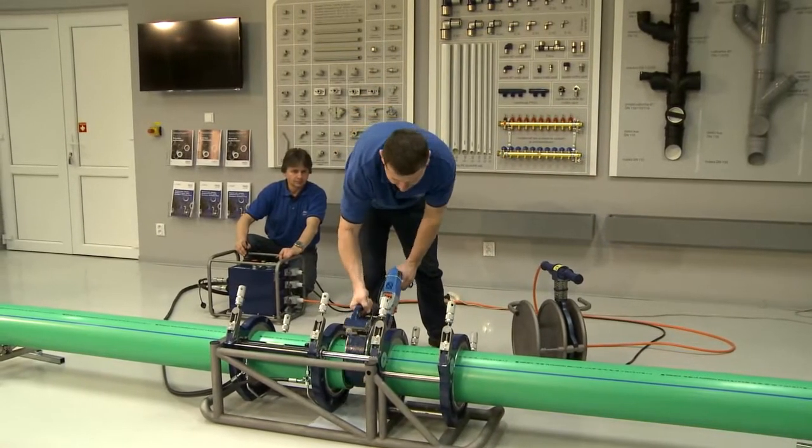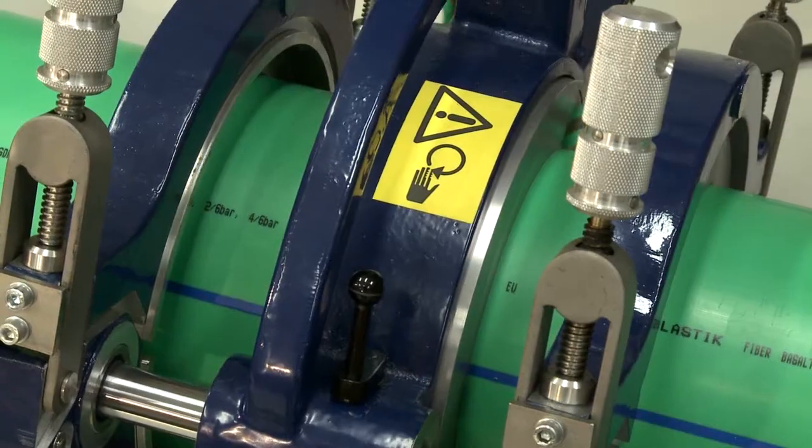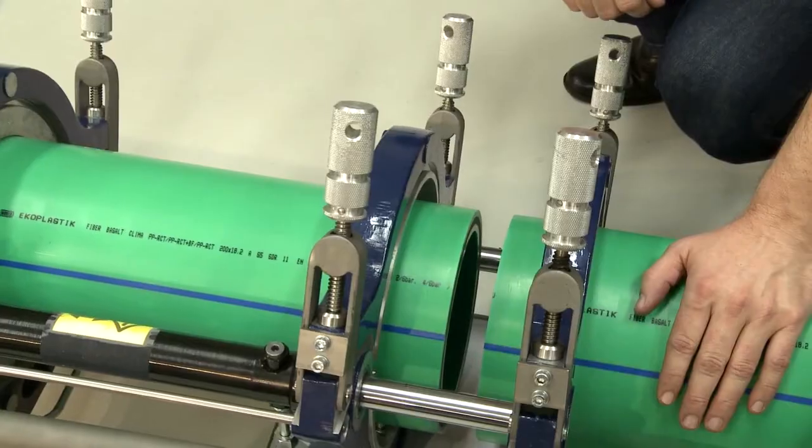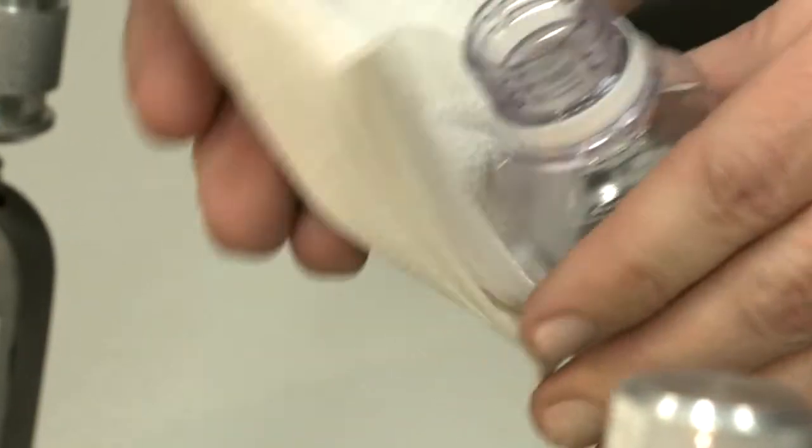First align the front surfaces with the planer and then check their offset. Before welding, make sure to degrease the pipe front surfaces with alcohol.